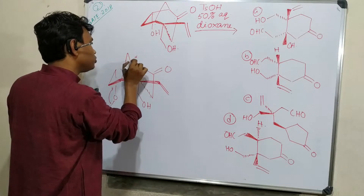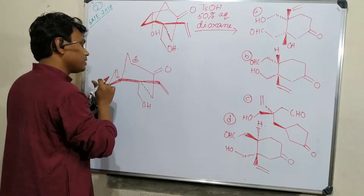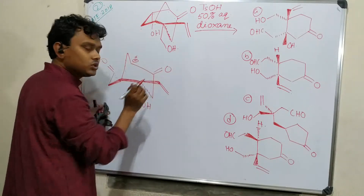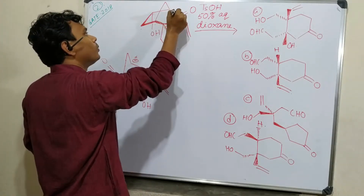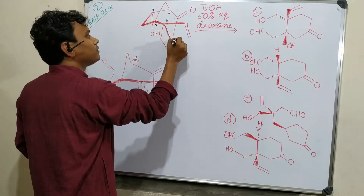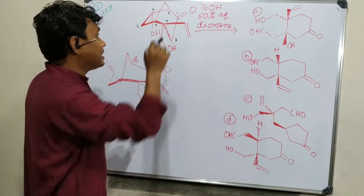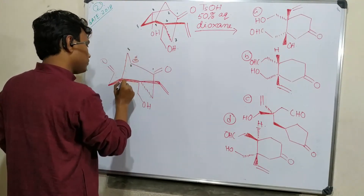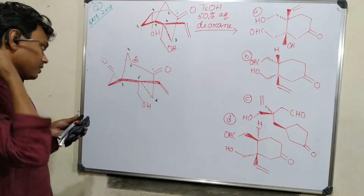This bond is going to break. A carbanion will be produced here — negative charge goes here and this center becomes positive. So right now you can say this is the enolate, which will be stabilized by conjugation. Now you must keep in mind how many rings were there: one, two, three, four, five, six, seven — this is a seven-membered ring. After this part of the ring is broken, we can count one, two, three, four, five, six — so now we have made a six-membered ring.